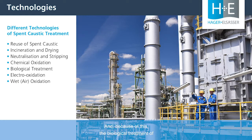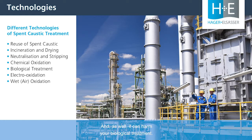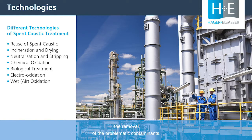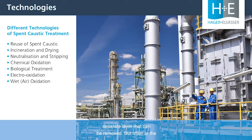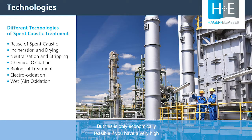The contaminants found in spent caustic are very often toxic, malodorous, and very hard to treat — you need very harsh conditions to achieve destruction of those contaminants. Because of this, biological treatment of spent caustic is often very problematic and can harm your biological treatment plant. There are other strategies to pre-treat spent caustic, such as removal of problematic contaminants: you neutralize the solution, then strip out the H₂S and remove organics that form a separate layer.